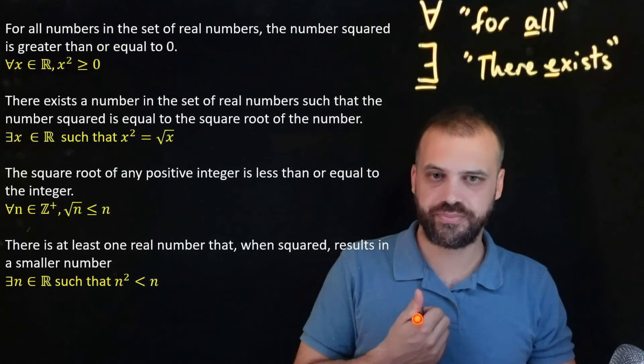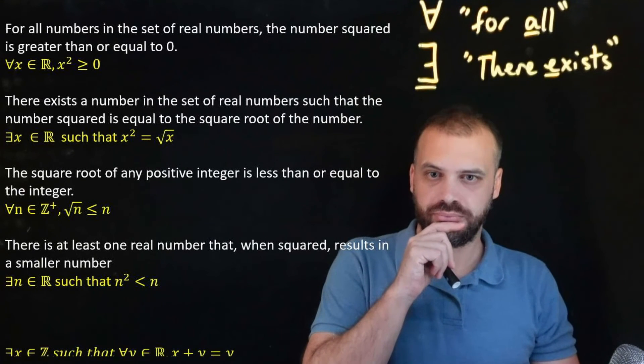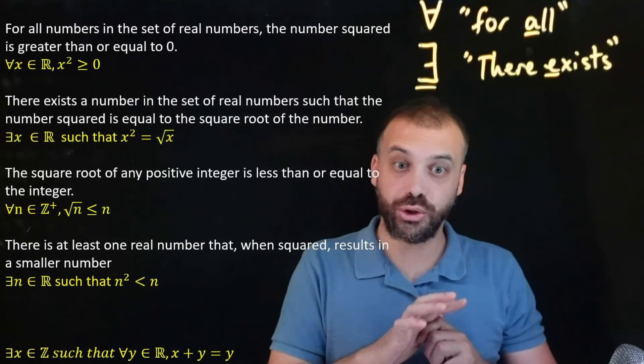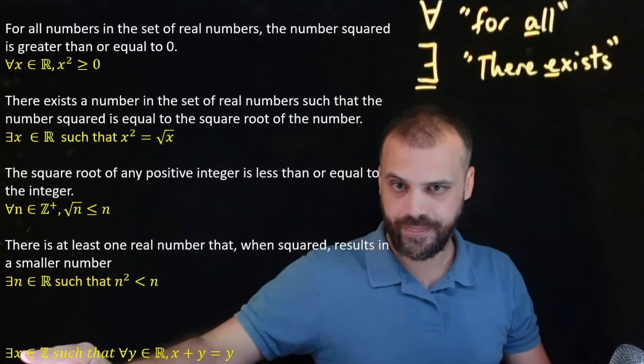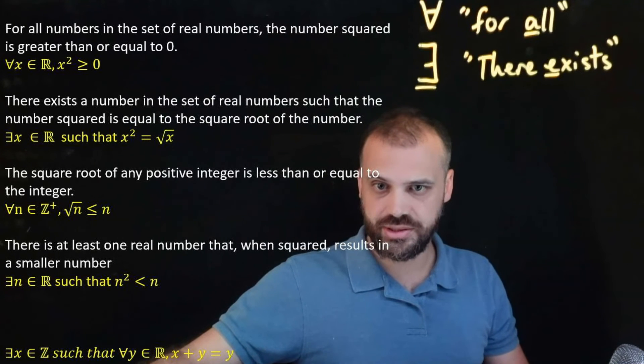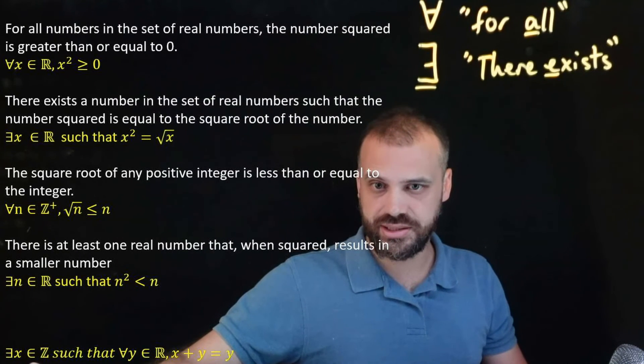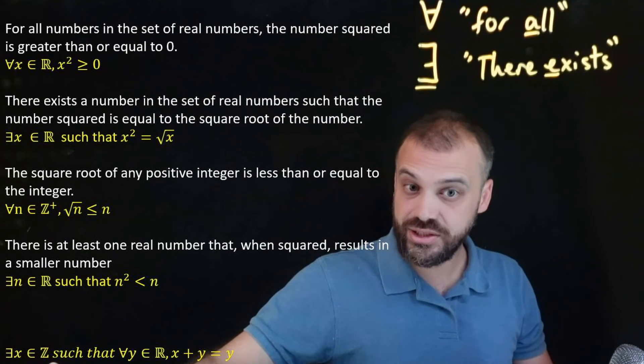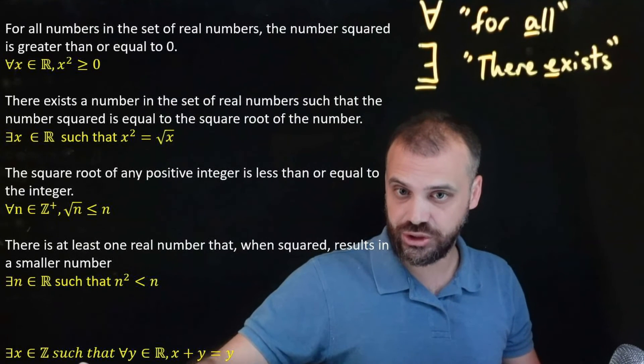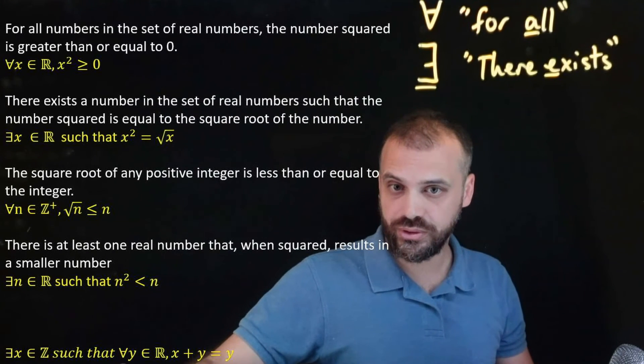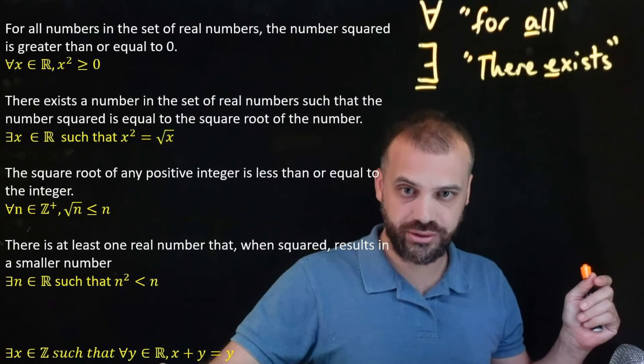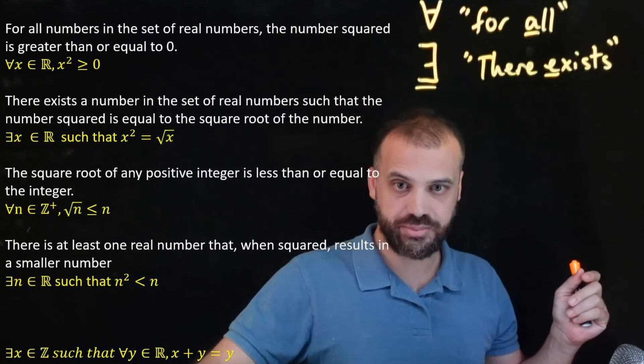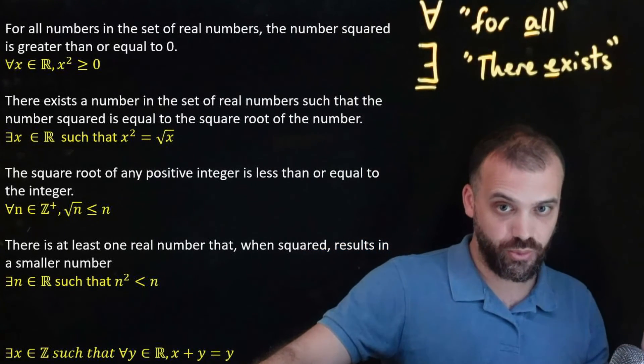Next up, this is the last one. There's a lot going on here, so let's read through it slowly. There exists a number in the set of integers such that for all a different number in the set of real numbers, x plus y equals y.